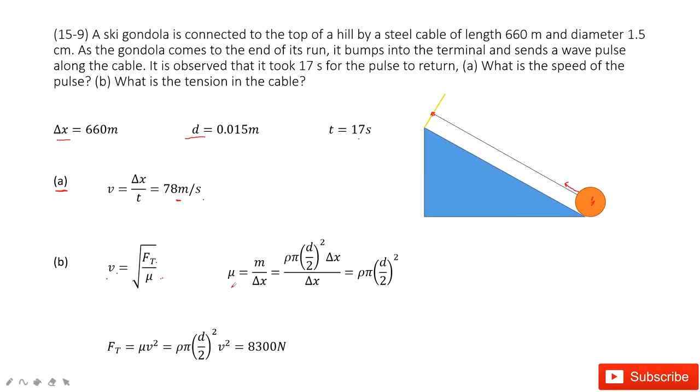Mu, as we say, is the density, the linear density for this cable. So we use the mass divided by delta x. Delta x is the length for this cable. Now we don't know mass, but we can find the density times pi r squared. This part is the cross-sectional area. Times the length of the cable. So this is the volume. Use density times volume to get mass. Delta x can cancel, so we get the function for mu.